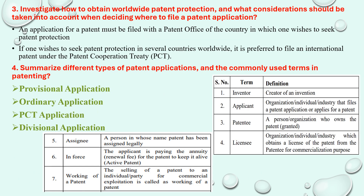Moving on to the next question: investigate how to obtain worldwide patent protection and what considerations should be taken into account when deciding where to file an application. There is no single entity called a 'world patent' — it is where you register for the patent that the patent will be available, meaning protection is country-specific.